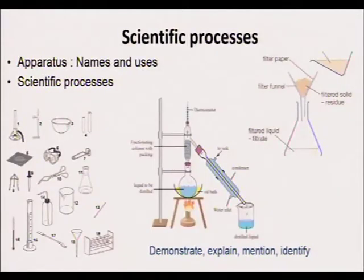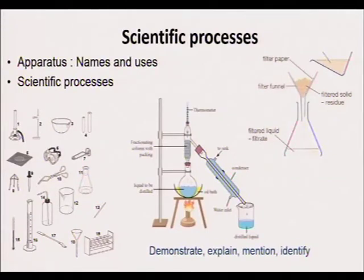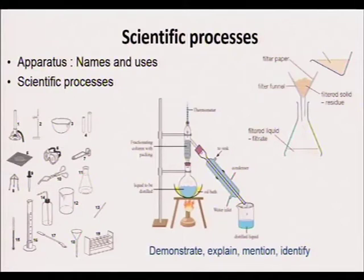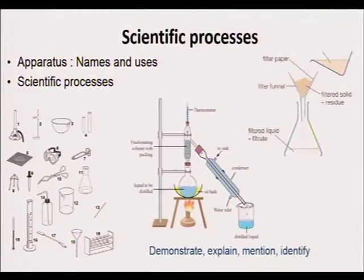We have a section on scientific process. What is important here is that you should be able to name and list some of the important apparatus or equipment used in scientific processes and commonly available in the lab. You should also be able to identify them and explain their uses — for example, a beaker. You also need to understand and explain some scientific processes like distillation and filtration.